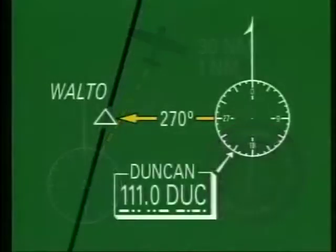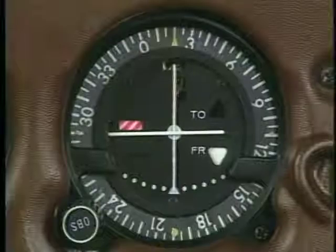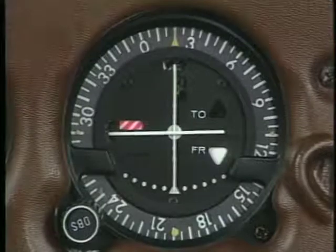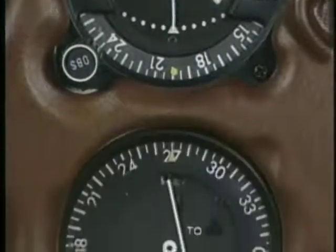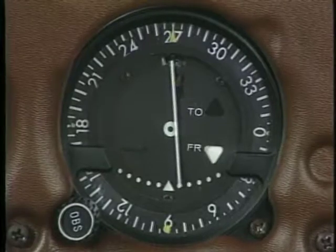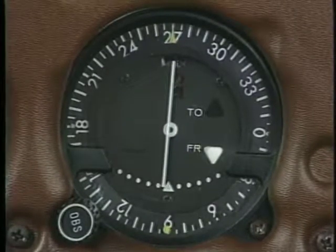Another skill you need for IFR navigation is identifying an intersection that is based on VOR. Here, you identify Walto by the intersection of the airway and the 270 degree radial from Duncan VOR. One indicator is used to navigate along the airway. The other one is tuned to the Duncan VOR, with the OBS set at 270 and a from indication. When the needle centers, you are at the intersection.